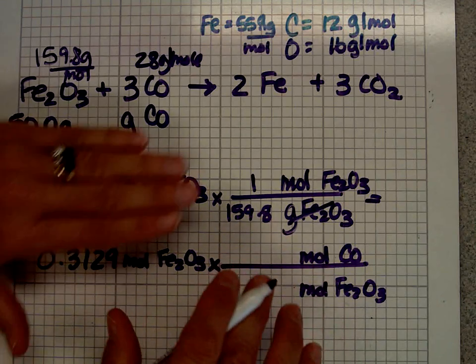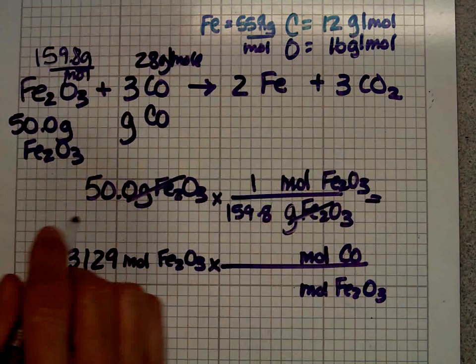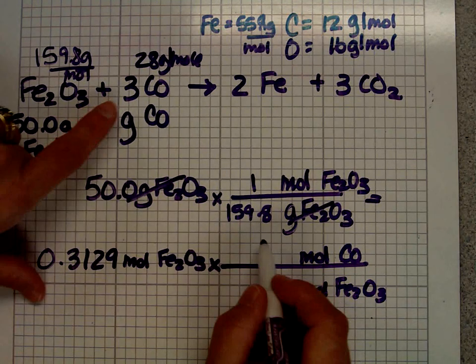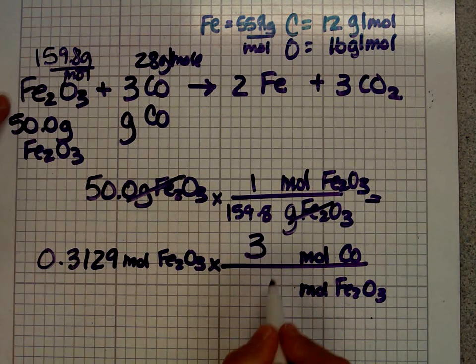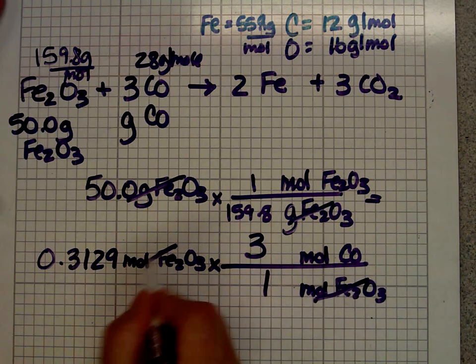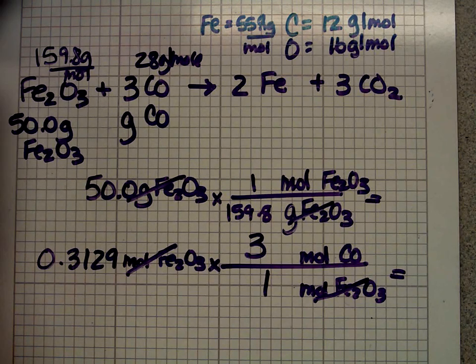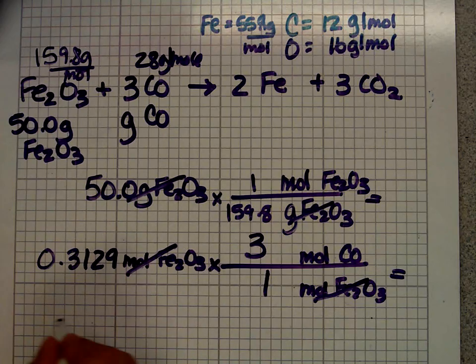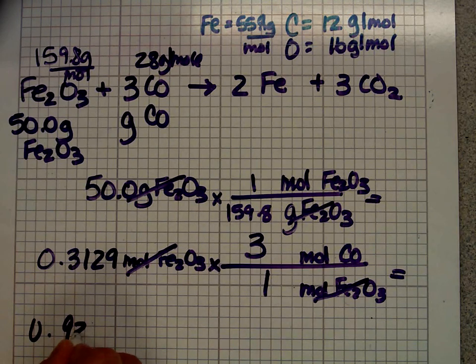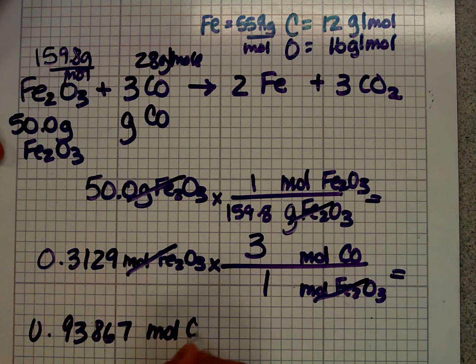Anytime it's moles over moles, you can ignore everything else except for that equation that we had at the very beginning. So I know there's a 3 next to the CO and there's a 1 next to the iron oxide. It's not there. It's invisible, but it's there. So 0.3129 times 3 means that I have 0.93867 moles CO.